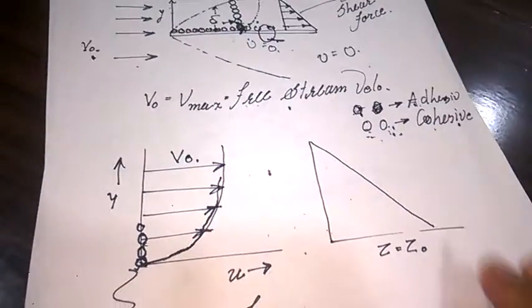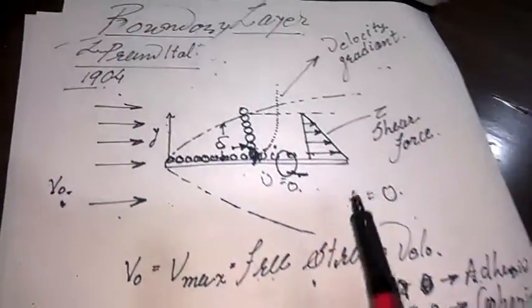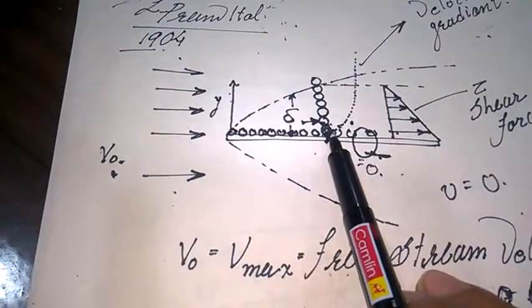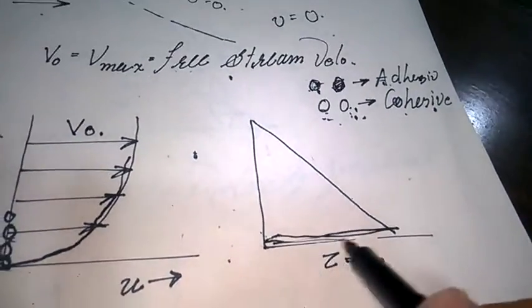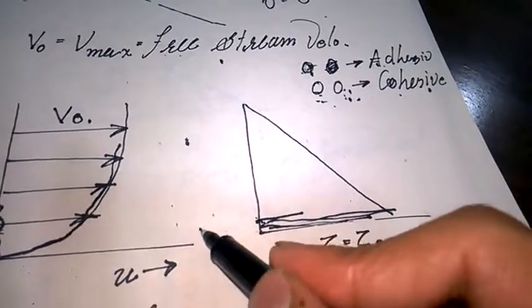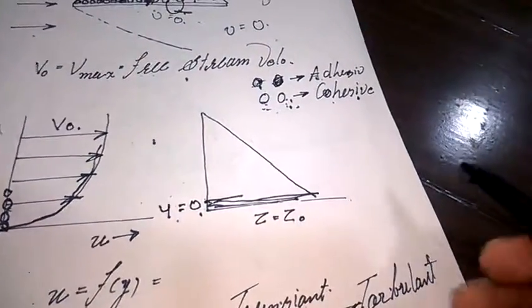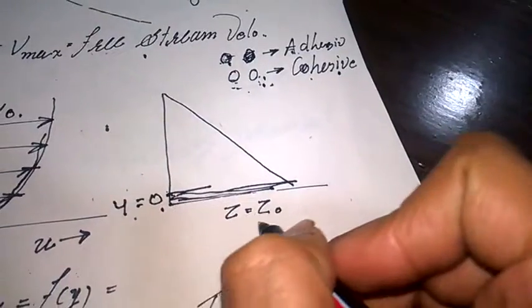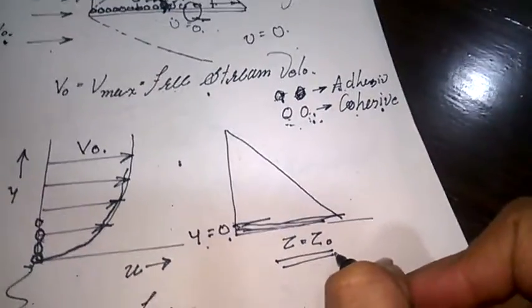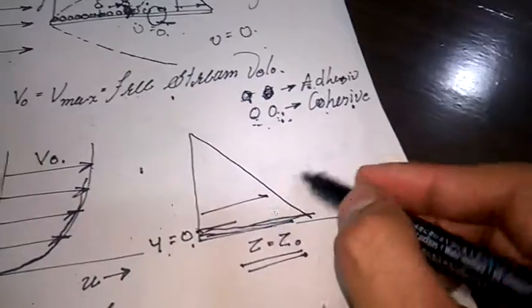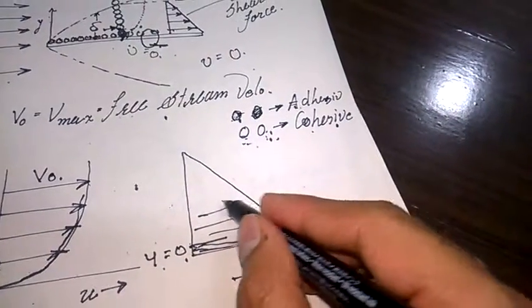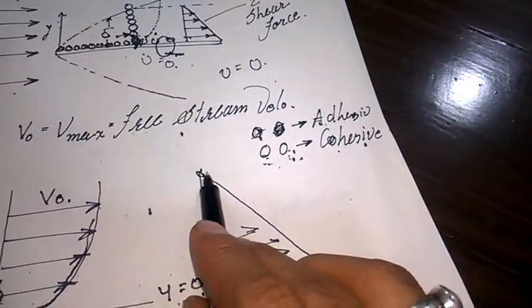At v = V₀ we reach the free-stream velocity. The force acting between these particles is known as shear force or shear stress. At y = 0, the shear stress is maximum: τ = τ₀. Gradually, as velocity increases toward the free-stream velocity, the shear stress decreases to zero.